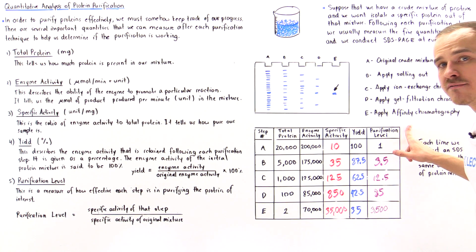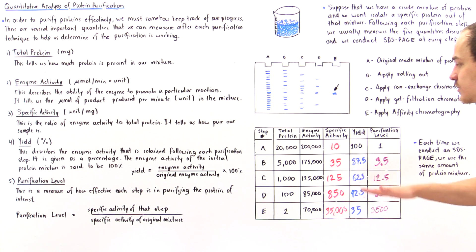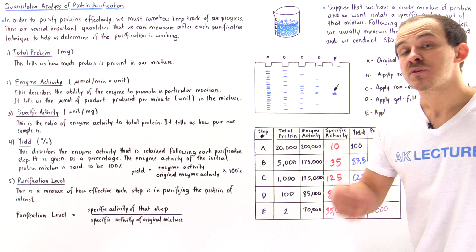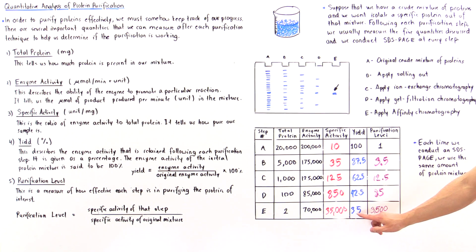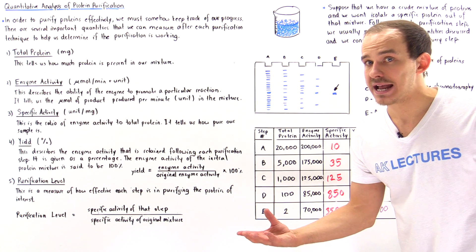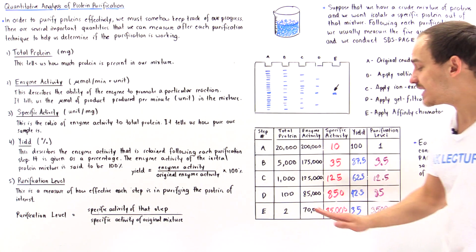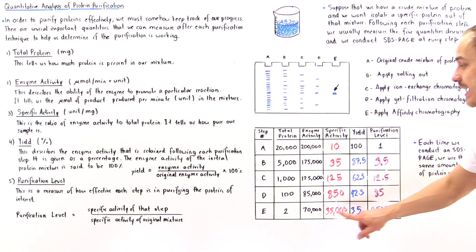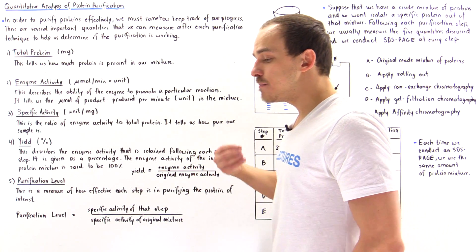We also have to keep track of the yield. We don't want our yield to drop to a very small amount. For example, if following our procedure this yield would have been, let's say, 5%, then this procedure would not have been efficient. Even though we would have had a high purification value, that yield is not enough.